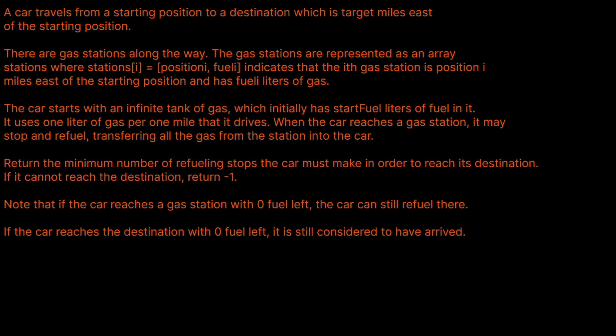Now let's read the question prompt. A car travels from a starting position to a destination which is target miles east of the starting position. There are gas stations along the way. The gas stations are represented as an array of stations where stations[i] equals (position[i], fuel[i]), indicating that the ith gas station is position[i] miles east of the starting location and has fuel[i] liters of gas. The car starts with an infinite tank of gas, which initially has startFuel liters of fuel in it. It uses one liter of gas per mile that it drives. When the car reaches a gas station, it may stop and refuel, transferring all the gas from the station into the car.